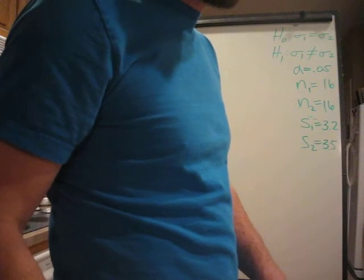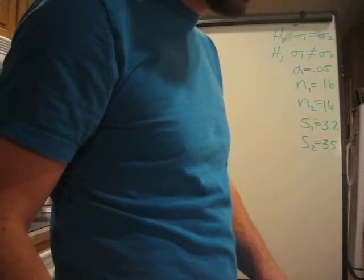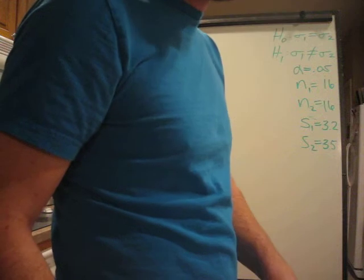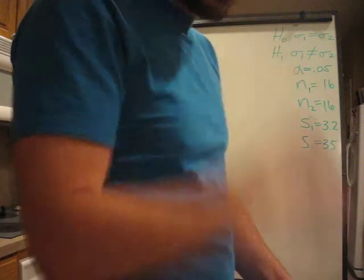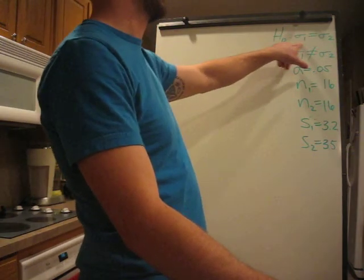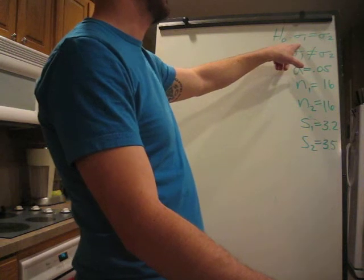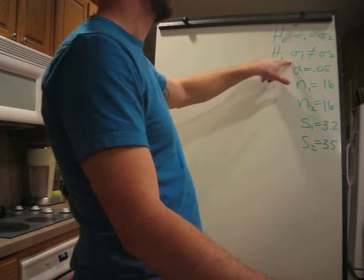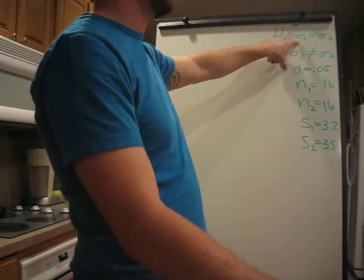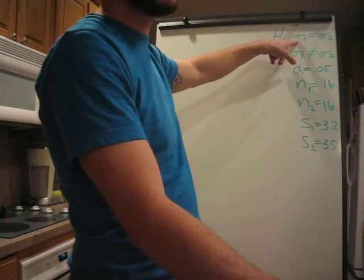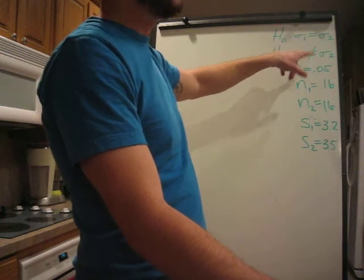All right, this problem is going to be testing the hypothesis. Inference for two population standard deviations. So two population standard deviations. H0 is that they are the same. H sub 1 is that they are not the same. So that means we're going to have a two-tailed test. And since we're doing it about population standard deviation, you know we're going to do chi-square. So that makes it a lot of fun. Two-tailed chi-square. So let's get going.